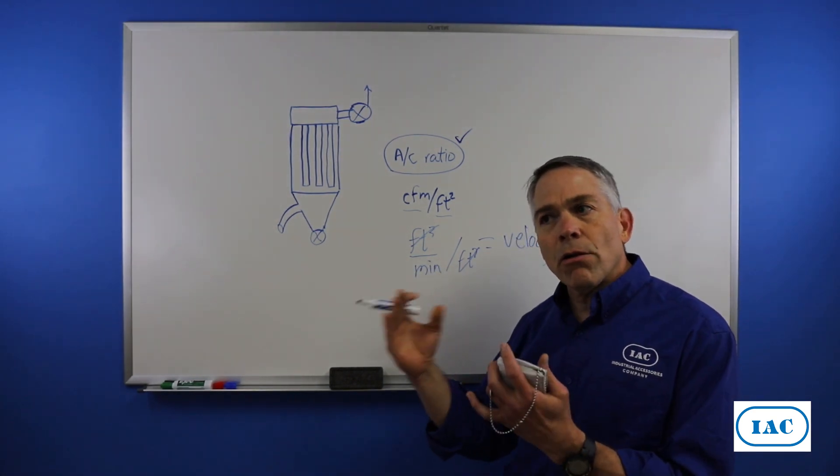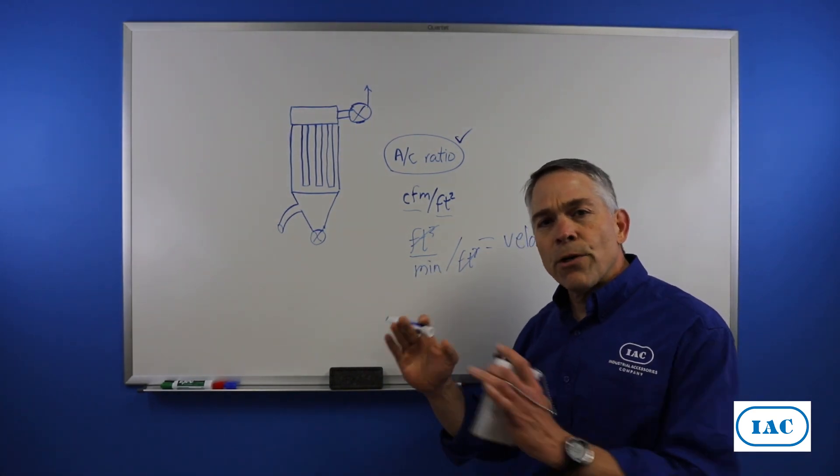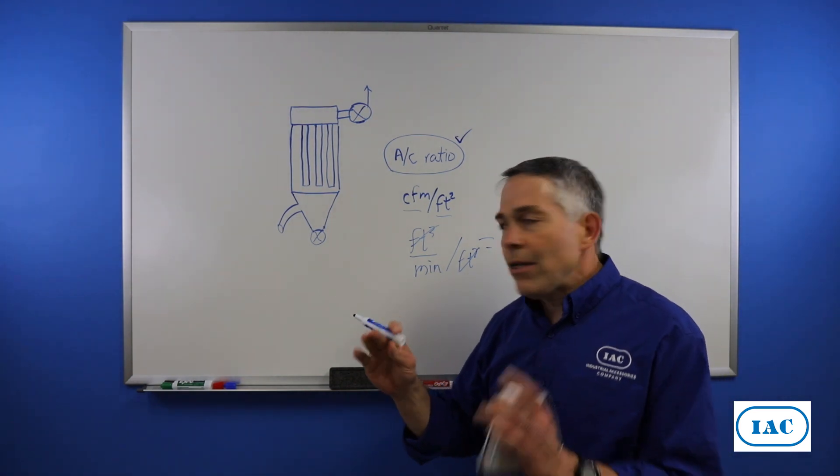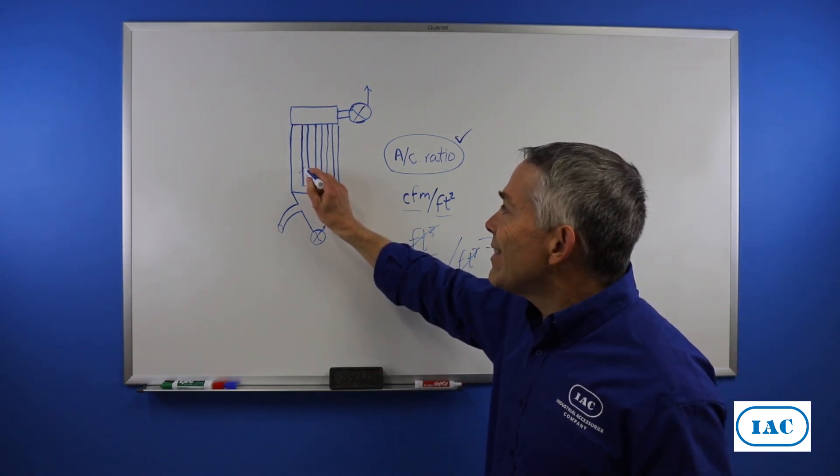And what is it then? Air-to-cloth ratio, CFM per square foot, it's actually velocity going through the filters. It's this velocity.